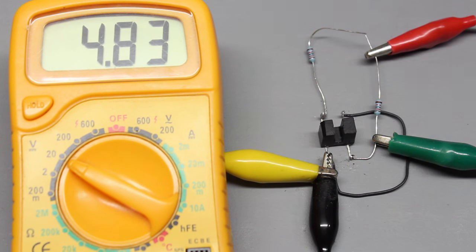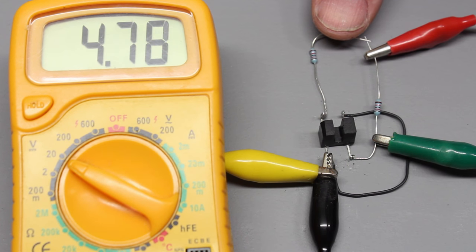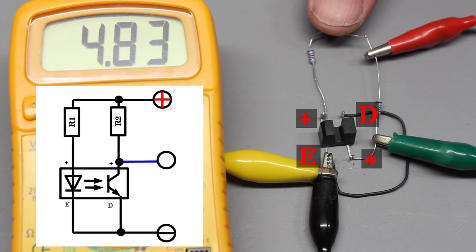Now the voltage drops to 4.76V. We have figured out the correct pin configuration, but the LED current is still unknown.